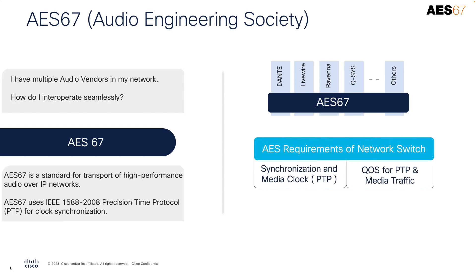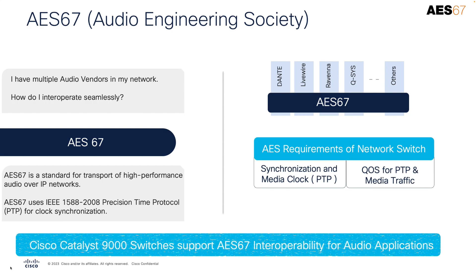For a network switch to be AES67 compliant, the switch must support precision time protocol and must also have the capability to provide appropriate QoS treatment to both PTP control packets as well as media traffic. Catalyst 9000 switches are AES67 compliant, along with the capability of supporting up to 16 sync packets per second.